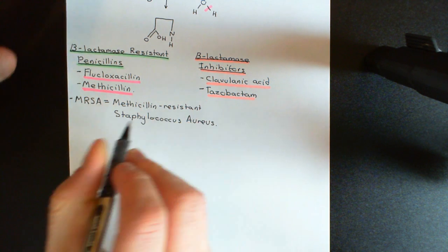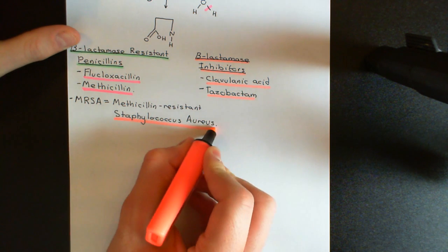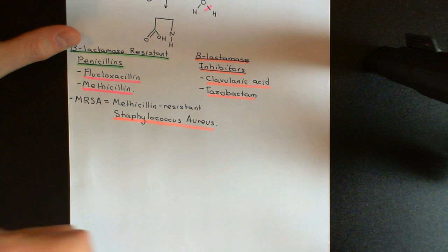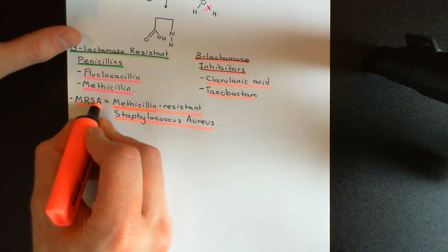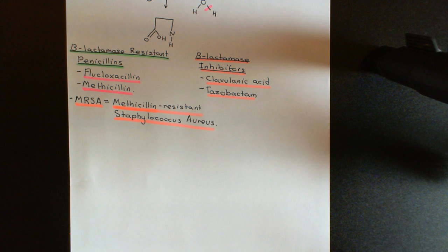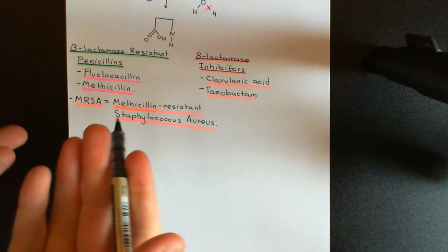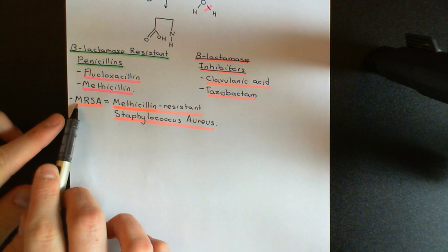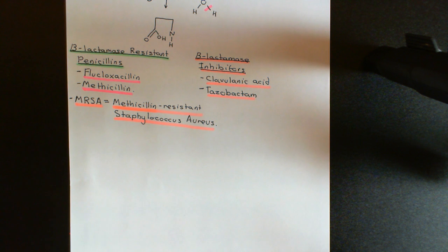MRSA is an example of a strain of Staphylococcus aureus that has got this modified form of peptidoglycan transpeptidase, meaning that now all penicillin antibiotics — even those supposed to be resistant to beta-lactamase breakdown, such as methicillin — are useless against it. This is obviously a big worry because penicillin antibiotics are a major class now completely useless against this strain. It's becoming more and more prevalent; the percentage of the Staphylococcus aureus population that is this methicillin-resistant strain is becoming larger and larger, beginning to dominate over the old Staphylococcus aureus which penicillin worked against.